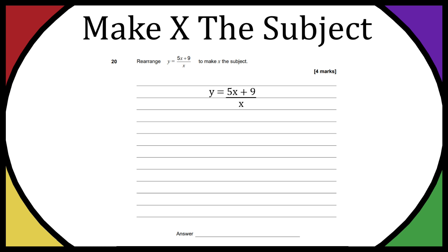So if I wanted to make x the subject the first thing I like to do when rearranging any formula is get rid of anything that's dividing, so get rid of anything on the bottom. For example we have x on the bottom here so I want to get rid of that, so let's times both sides by x.